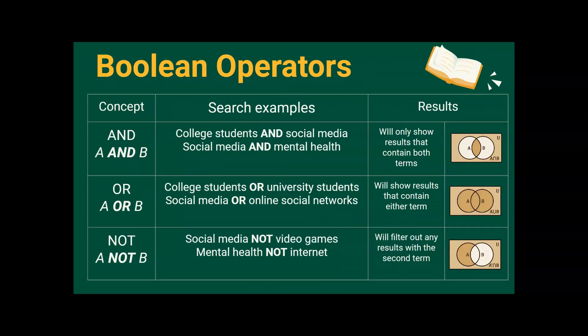Say you have a long list of keywords to use and phrases from your topics field. What happens when you need to search with more than one of them at a time? This is where we can use Boolean operators to either narrow or widen our search.